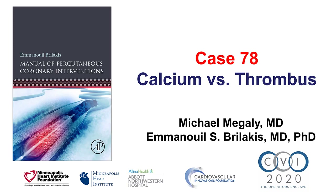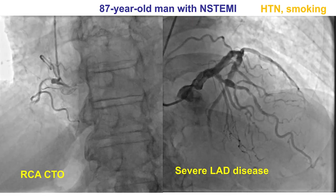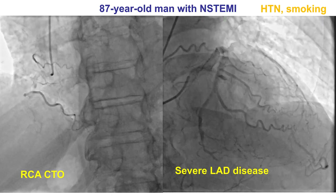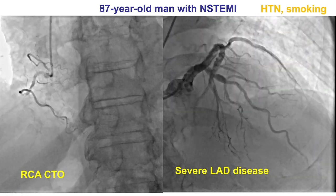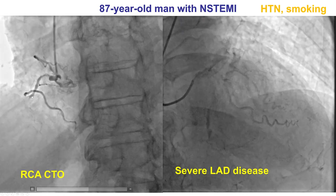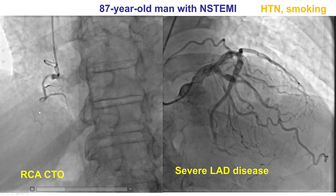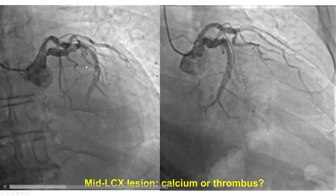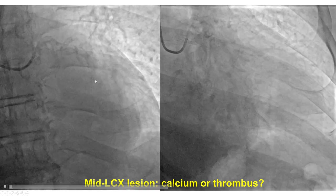This is a case illustrating some of the options for differentiating calcium versus thrombus as well as management of the two. The patient was an elderly man who presented with non-ST elevation myocardial infarction. He underwent diagnostic angiography that showed significant disease in a heavily calcified LAD, a CTO of the mid-right coronary artery, and there was also a filling defect within a heavily calcified circumflex artery.